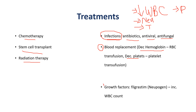Patients with leukemia sometimes have extremely low white blood cell and neutrophil counts. To increase their white blood cell count, they may receive growth factors such as filgrastim, also known as Neupogen.